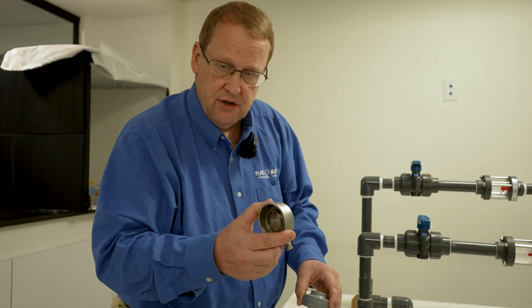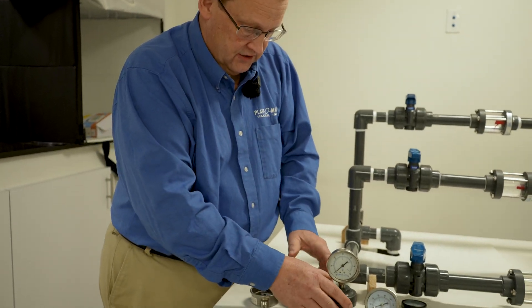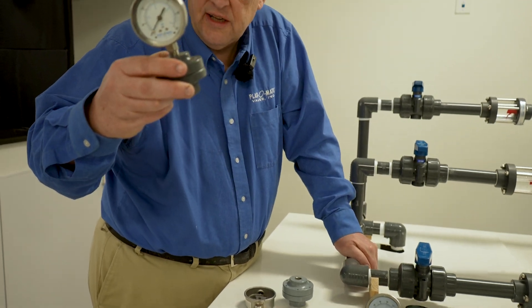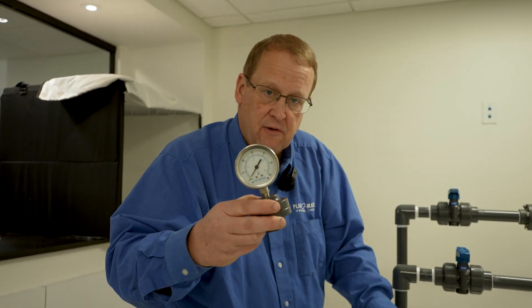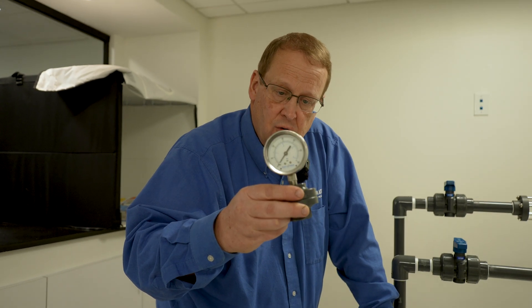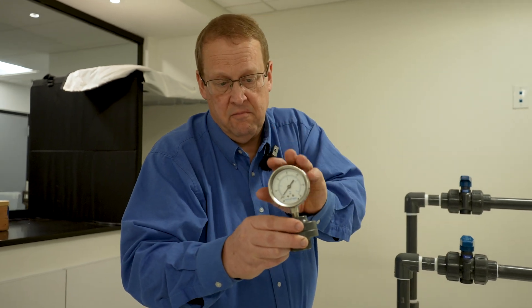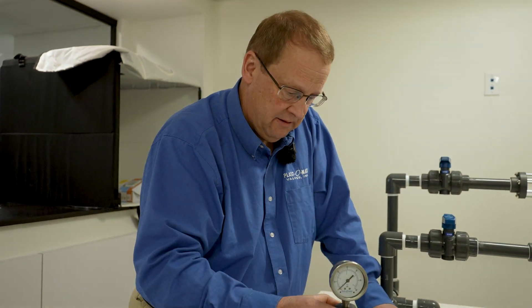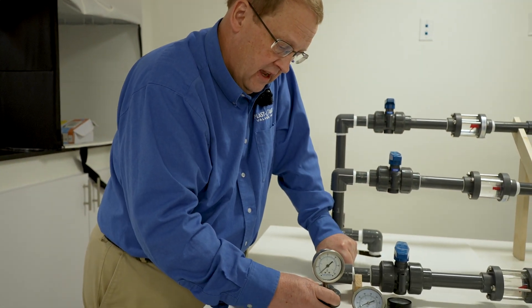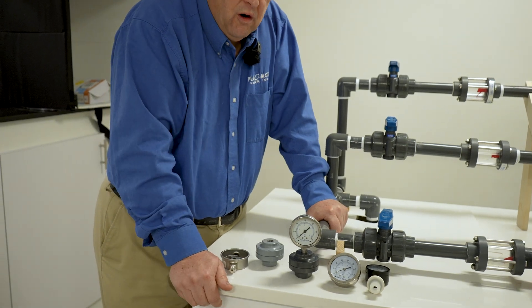All together the assembly looks like this and that diaphragm protects your process from metals leaching in or from your chemical process attacking the metal instrument. It can also be used for pressure switches and pressure transducers.